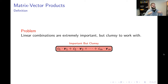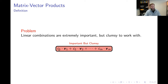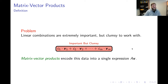Linear combinations are extremely important and extremely prevalent throughout all of mathematics. The problem is they're kind of ugly and clumsy to deal with. There is an elegant solution to this problem, and this gives us the notion of matrix vector products. The importance of matrix vector products is that they are designed to encode the data of a big linear combination into a single expression — a matrix times a vector.